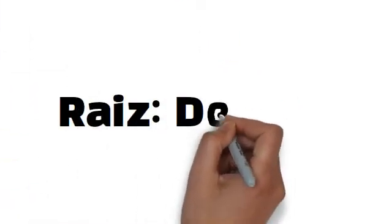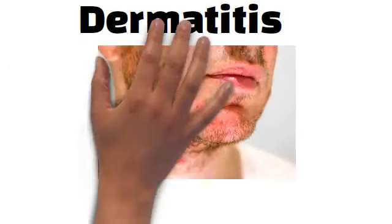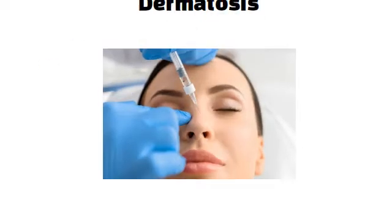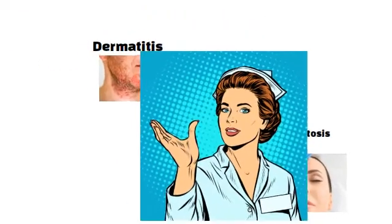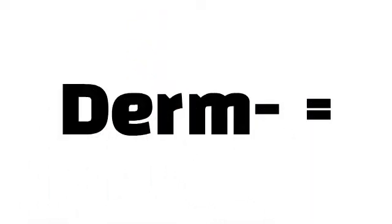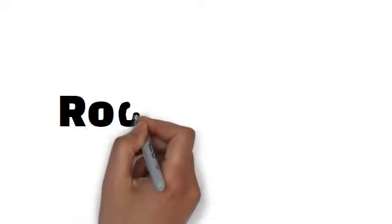La siguiente raíz de palabras es referente al sistema tegumentario: derm, la cual tiene como significado la piel. La raíz derm se usa en palabras como dermatitis, irritación de la piel, y dermatosis, enfermedad de la piel. Es importante recordar que una palabra que comience o contenga la raíz derm se relaciona al sistema tegumentario.